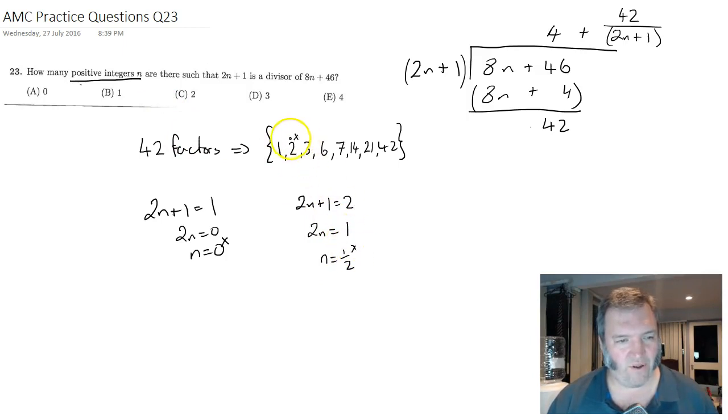You can check for yourself, but it's not going to work for 6 or 14 or 42 either. Because in each of those cases, my first step when I subtract the 1, I'm going to have 2 times a number equals an odd number, so n is going to be a fraction. That leaves me with three cases.